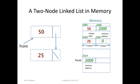So we have now linked node 50 to node 25. There's one more thing to do and that is to change the address in front so that front points to the 50 node instead of the 25 node. This means instead of 2000, front must hold the address 1984. And that's it.